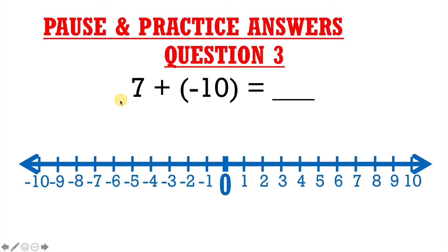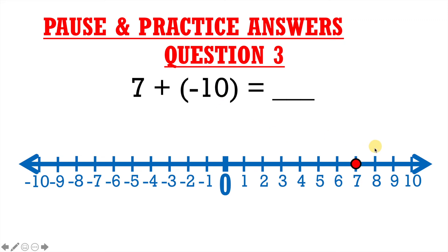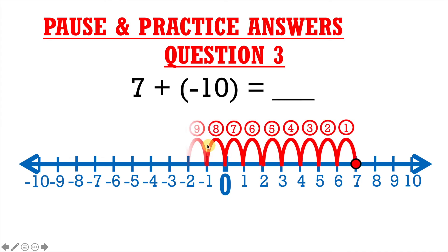Question 3: our starting point is 7, so we'll plot a point at positive 7. Our second number is negative 10, and since it's negative, we're going to the left. From positive 7, I'll move 10 spaces to the left — 1, 2, 3, 4, 5, 6, 7, 8, 9, 10 — and we land on negative 3. Therefore, our final answer is negative 3.